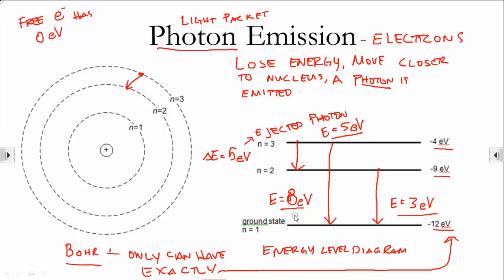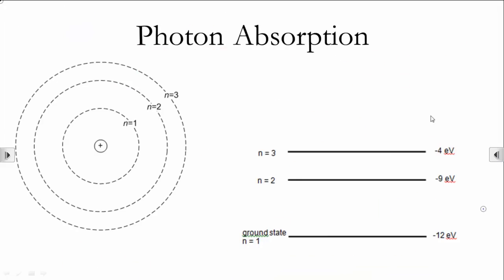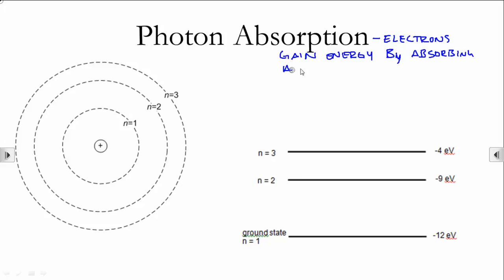These are the only 3 energies of light that can escape this atom because these are the only 3 energy transitions possible. We're not going to see 4 electron volts or 9 electron volts because those are not possible transitions. That's emission. This can go the other direction, and that's called photon absorption. In photon absorption, electrons gain energy by absorbing a photon and move up a level or multiple levels.